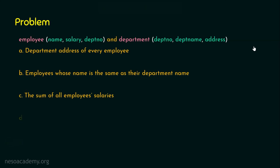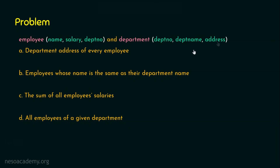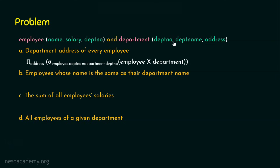Let's start with option A: the department address of every employee. The employee information is in the employee relation and the department-related information is in the department relation. We want the employee name and the department address of each employee, but they are in separate relations. We can combine these two relations using the Cartesian product. If the employee relation has four tuples and the department relation has five tuples, four multiplied by five gives twenty tuples in the output, where every tuple is associated with all tuples of the other relation.